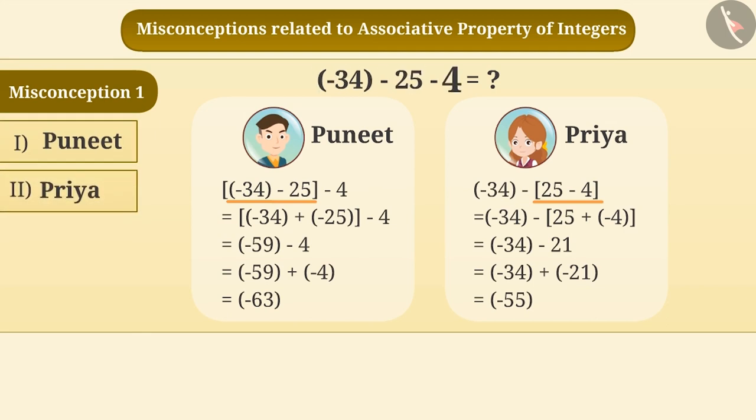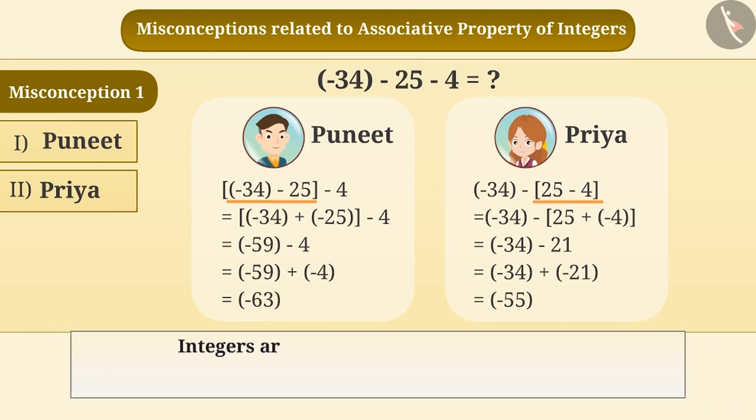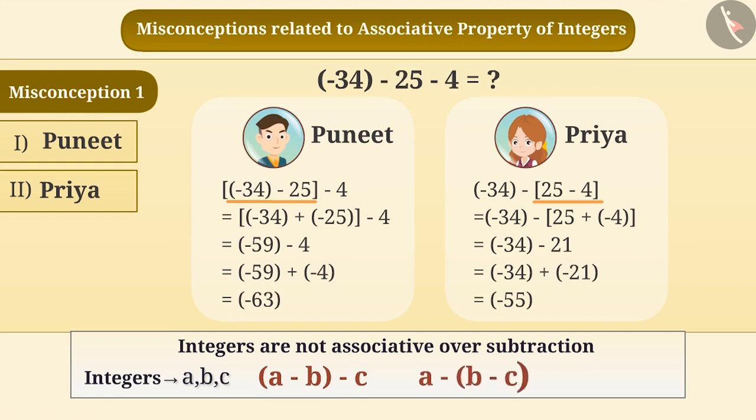While performing the subtraction of integers, sometimes the fact that integers are not associative over subtraction is ignored. That means, for any integers a, b, c, (a - b) - c is not equal to a - (b - c).